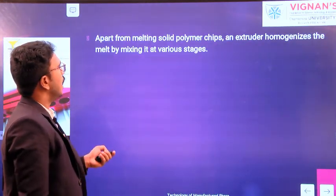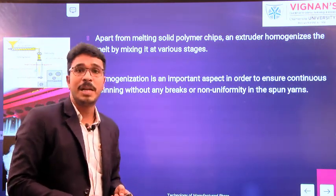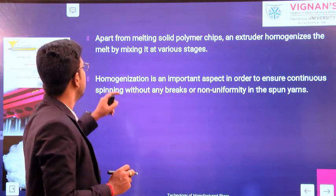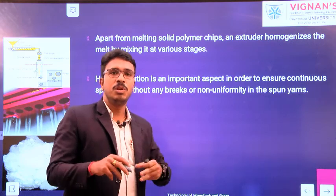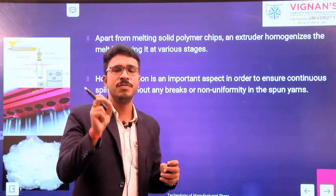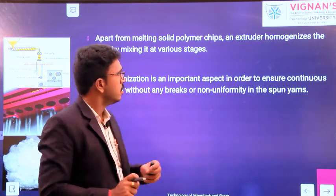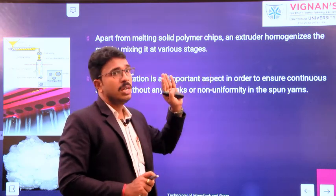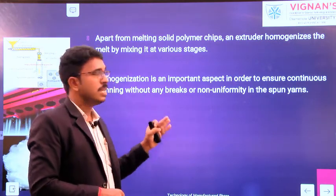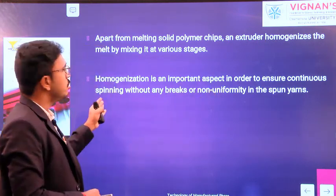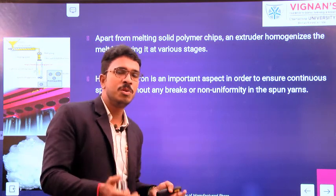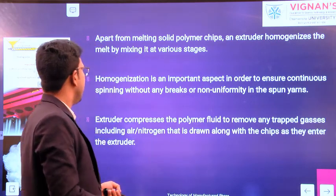Apart from melting the polymeric chips, the extruder also homogenizes the melt by mixing at various stages. The homogenization is an important aspect to ensure continuous spinning without any breaks or non-uniformity of spun yarns. If there is no homogeneity in the polymer mix, you can expect more end breakages. The extruder also compresses the polymer fluid to remove any untrapped gases — including air or nitrogen — that are drawn along with the chips as they enter into the hopper. So the extruder does three things: melts the polymer, homogenizes the polymer melt, and removes trapped gases.